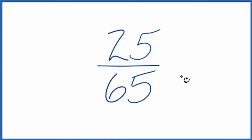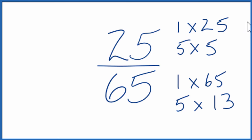And to do that, we need to find a common factor, something that goes into 25 and 65. So these are the factors of 25 and 65. And I'm looking for a common factor.